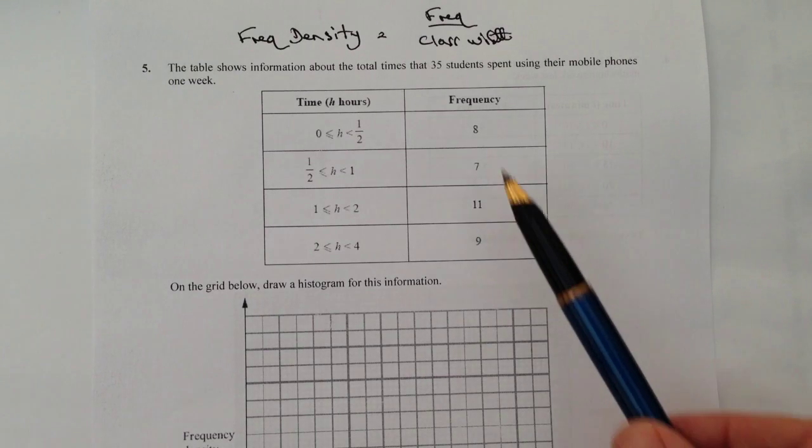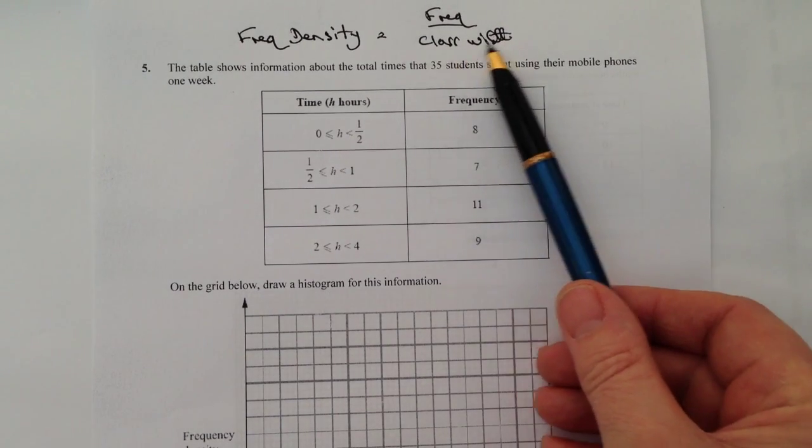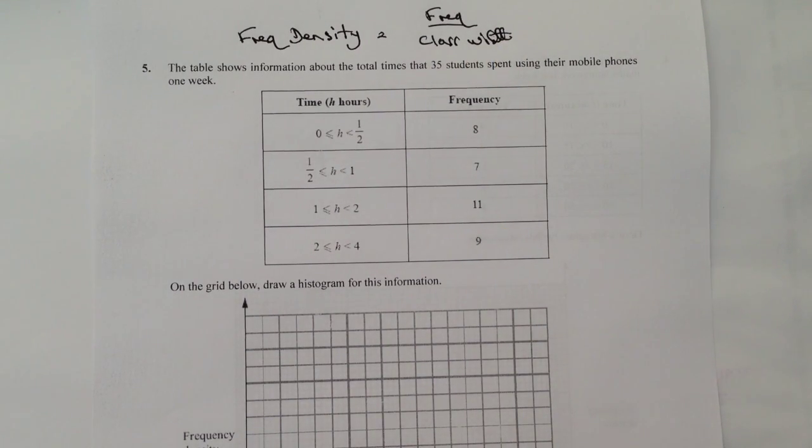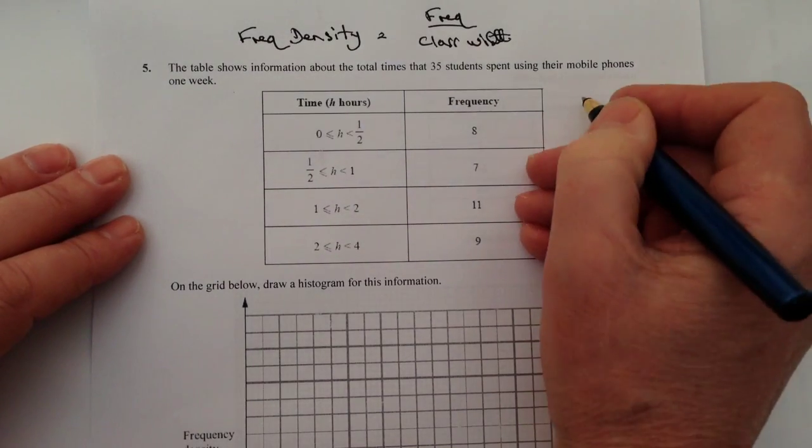I've got the class width, which is absolutely fine, and that's the bit that goes at the bottom, the horizontal axis of a histogram. But I do need the frequency density, which goes on the vertical axis. So the first thing is I'm going to calculate the frequency density.